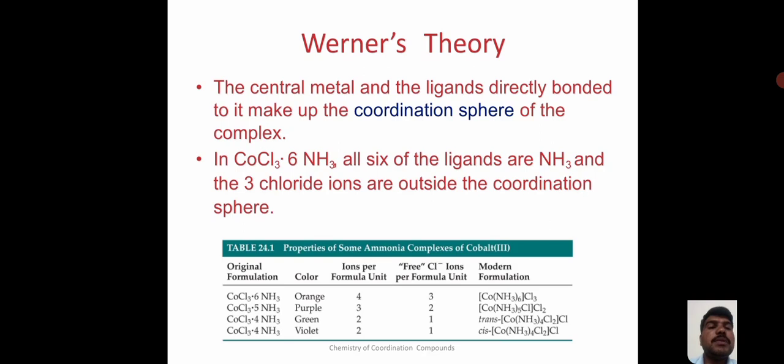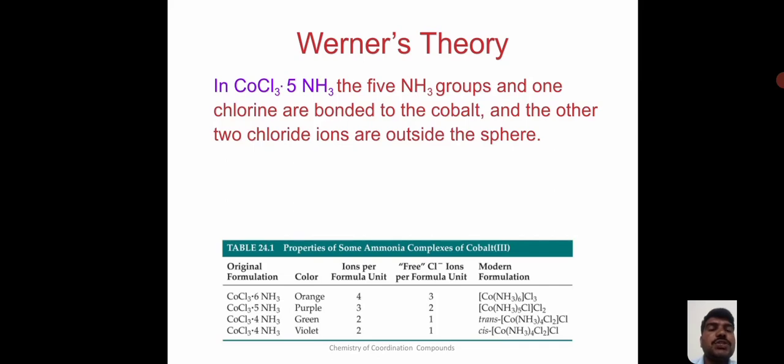Werner theory: the central metal and the ligands directly bonded to it make up the coordination sphere of the complex. In cobalt trichloride hexaammine, all 6 ligands are ammonia and the 3 chloride ions are outside the coordination sphere. In cobalt trichloride pentaammine, the 5 ammonia groups and 1 chlorine are bonded to the cobalt and the other 2 chlorine ions are outside the sphere.